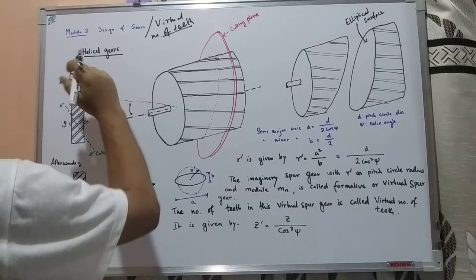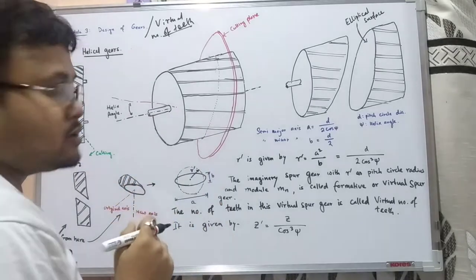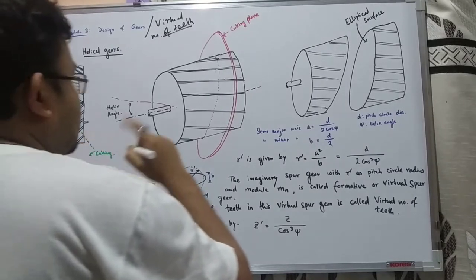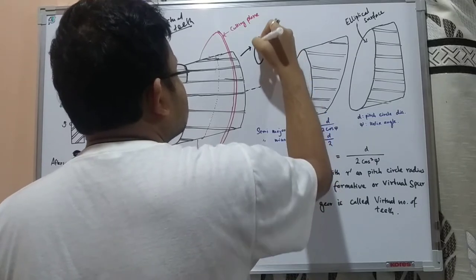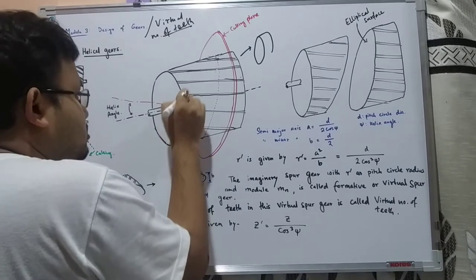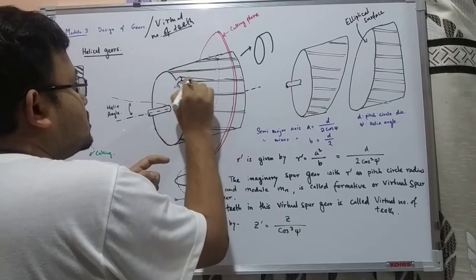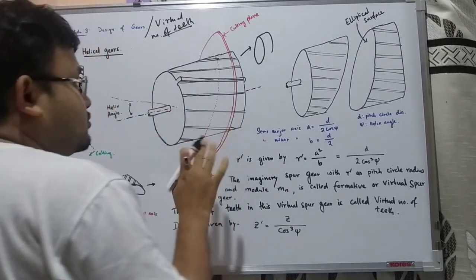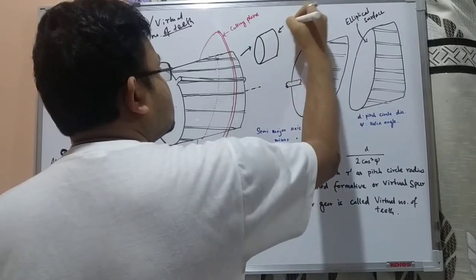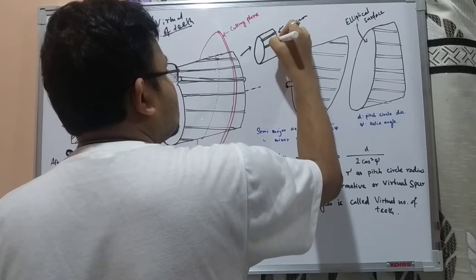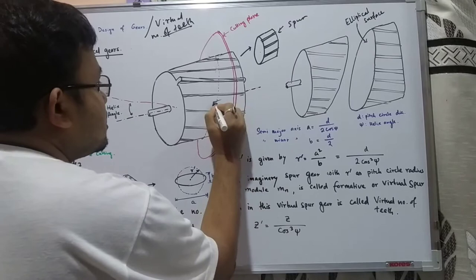These are helical gears, as I explained in the previous video. Now see how we make this into a spur gear. In a spur gear, the teeth are straight and parallel to the axis, but in a helical gear the teeth are at an angle — that angle is the helix angle.